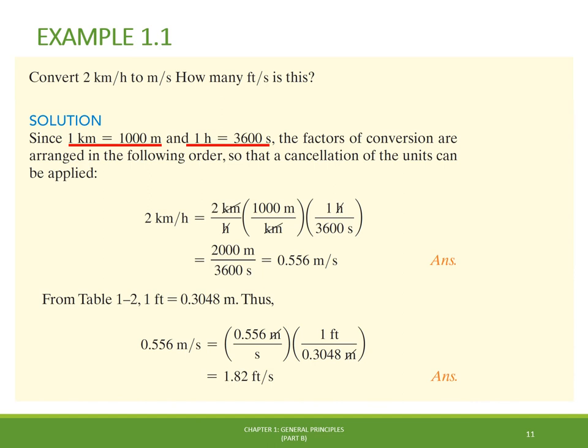For the second part, we do the same thing using the conversion factor from the textbook table, in which 1 foot equals 0.3048 meters. By arranging the conversion factor to cancel the meter unit and doing the math, the final answer is 1.82 feet per second.